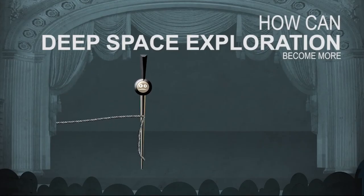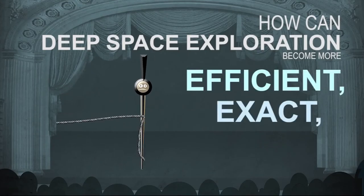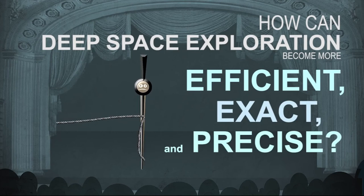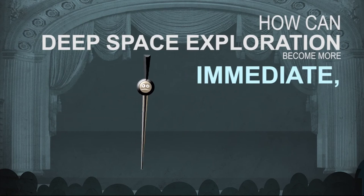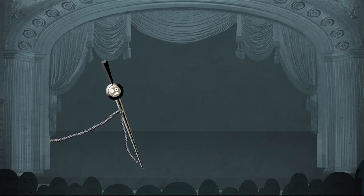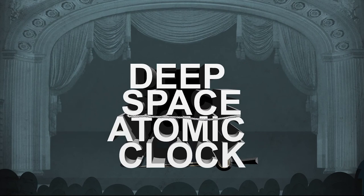So, how can deep space exploration become even more efficient, exact and precise? How can a spacecraft's navigation, as it travels further and further into space, be more immediate and independent of having to check in with... What's that Sammy? Of course! The Deep Space Atomic Clock.